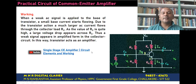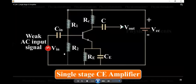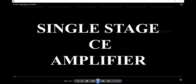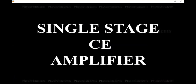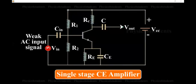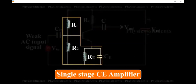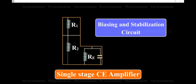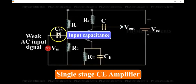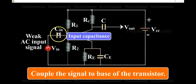Now let us understand the working of the CE amplifier using this animation. The animation shows a single-stage CE amplifier. The different circuit elements and their functions are described as follows. The biasing circuit consists of resistors R1, R2, and RE, which form the biasing and stabilization circuit. The input capacitor C-in is used to couple the signal to the base of the transistor.